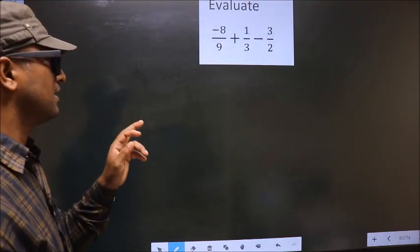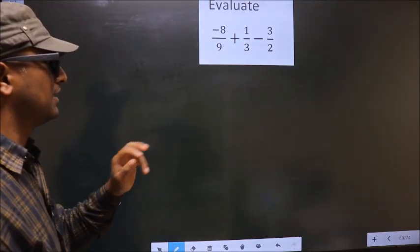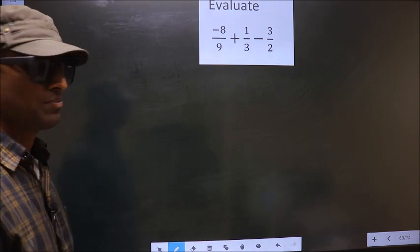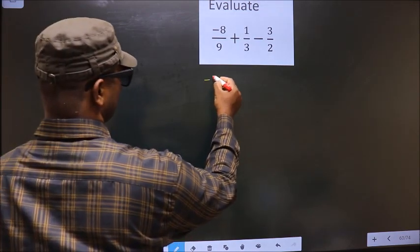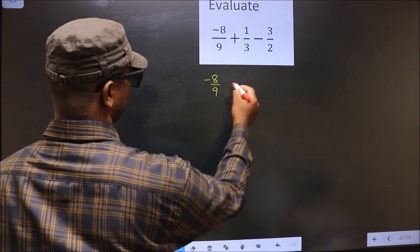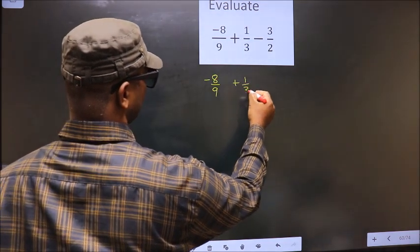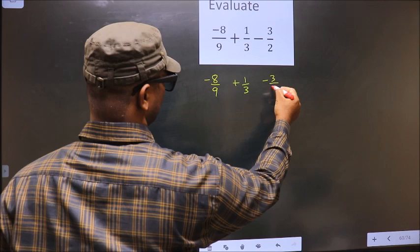Evaluate minus 8 by 9 plus 1 by 3 minus 3 by 2. First given is minus 8 by 9 plus 1 by 3 minus 3 by 2.